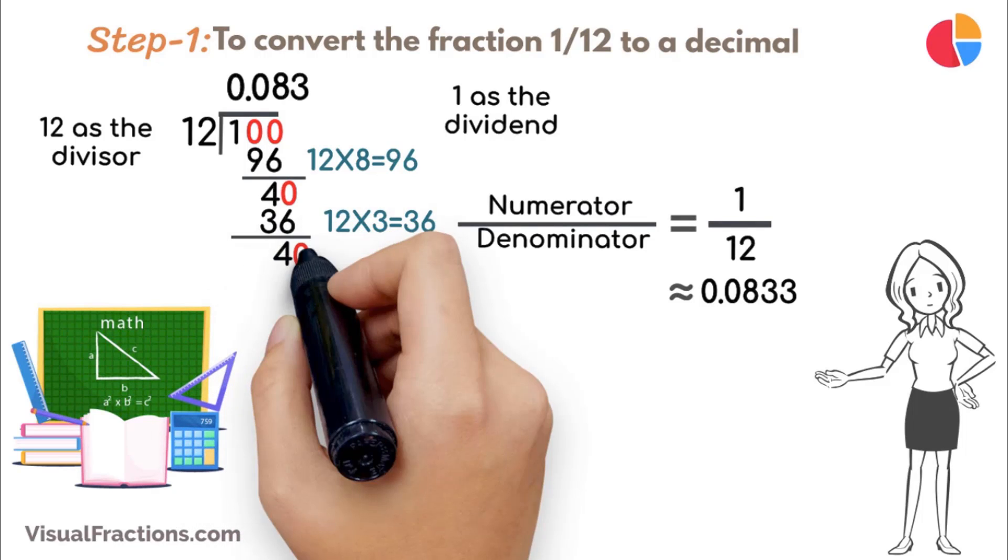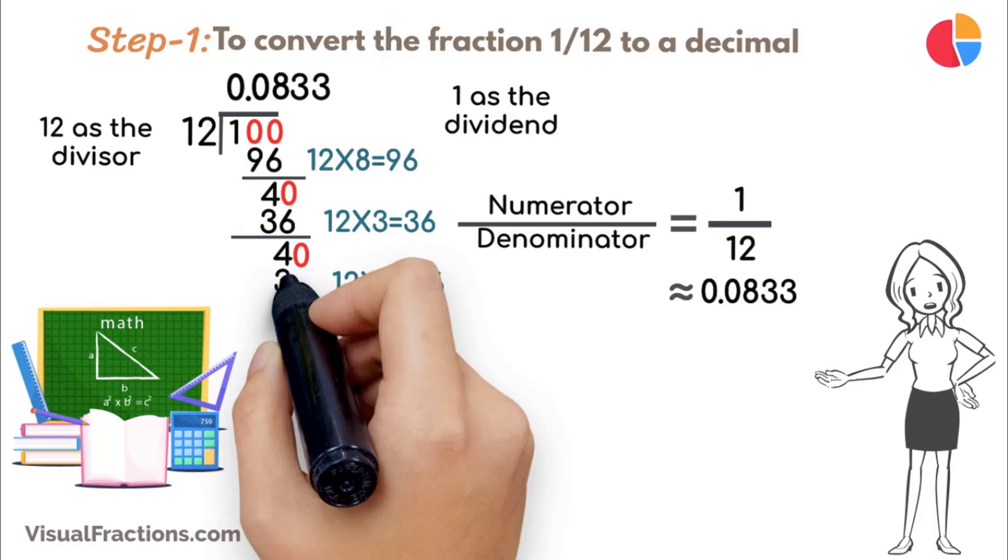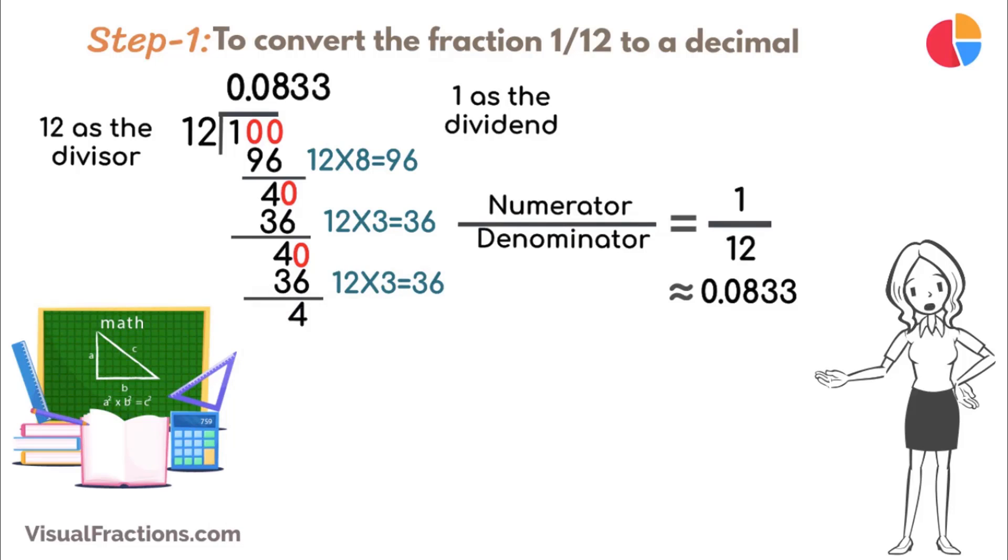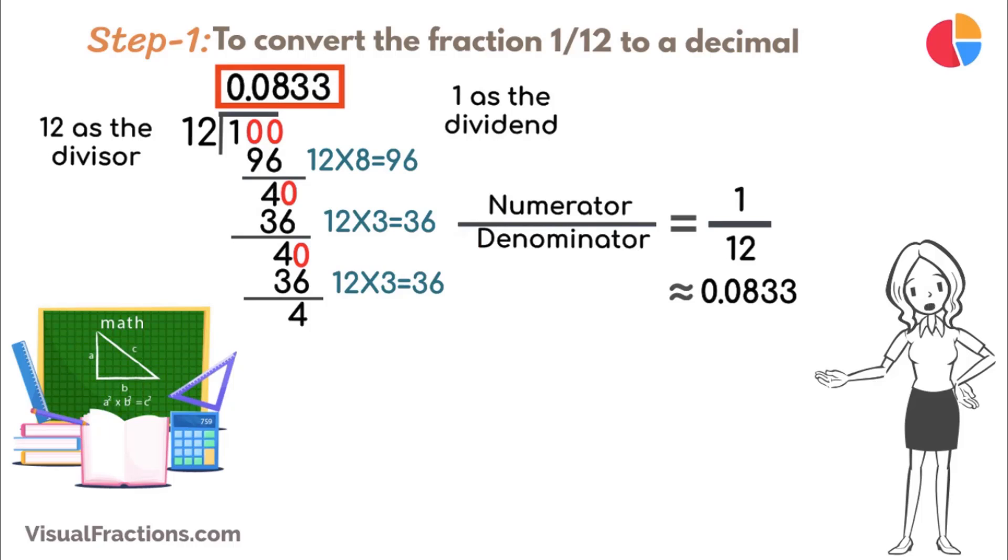This process begins to show the repeating nature of the decimal. As we continue this method, consistently bringing down 0s and seeing that 12 fits into 40 three times, it adds more 3s to the quotient, establishing a repeating decimal sequence. Thus, the decimal extends as 0.0833, and so forth.